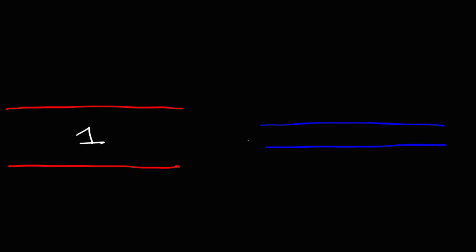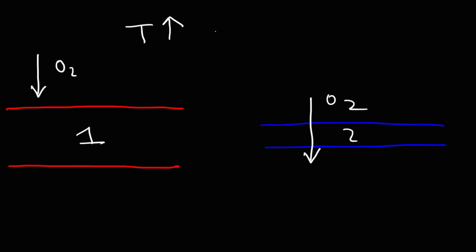The next factor has to do with the thickness of the membrane. The first membrane is thicker, so it's going to take longer for oxygen to flow through it. The second membrane is thinner, so oxygen will be able to flow through quicker. As the thickness of the membrane increases, the distance those gas particles have to travel increases, and thus the rate of diffusion decreases. So the rate of diffusion is inversely related to the distance traveled, which is proportional to the thickness of the membrane. Those are some factors that affect the rate of diffusion of gas particles flowing through the cellular membrane.